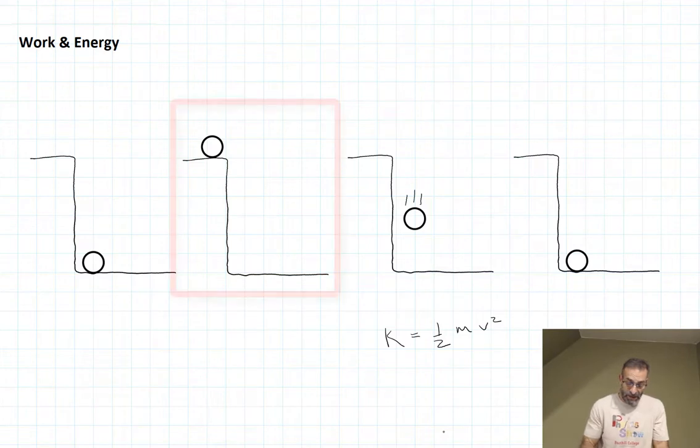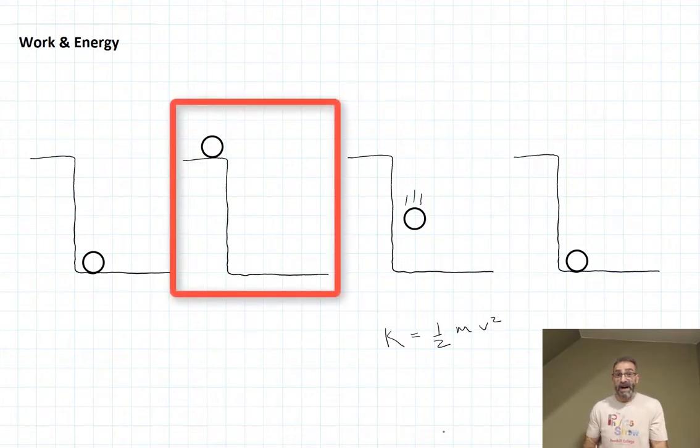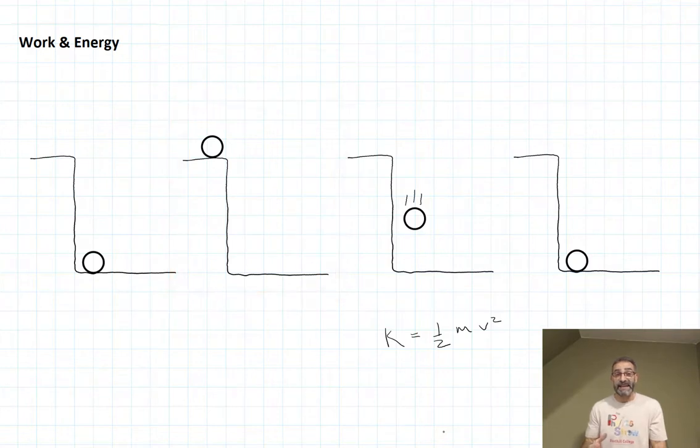But in the previous case, when the rock was sitting at the top of the cliff, it didn't have kinetic energy. So where did that kinetic energy come from? Well, it had something called gravitational potential energy. We use a capital U for potential energy, and that's equal to the mass of the object times the acceleration of gravity times the height, mgh.